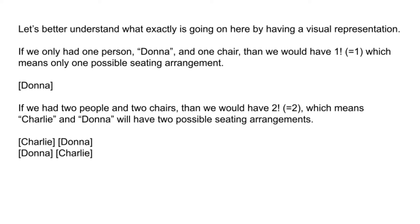If we had 2 people and 2 chairs, then we would have 2 factorial, which is equal to 2, meaning Charlie and Donna will have 2 possible seating arrangements.